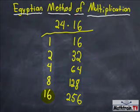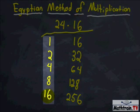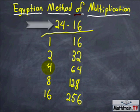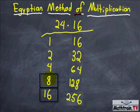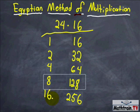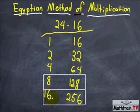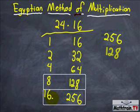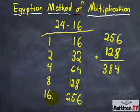Now we move to this side and pick which numbers we want to add to get to 24. We can do 16 plus 8, which is 24. So we circle those rows — that gives us 8 and 128, and 16 and 256. Then we add 256 and 128, and there we go, we have our answer.